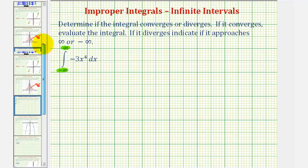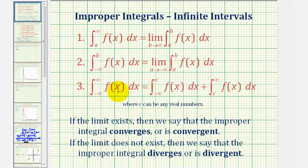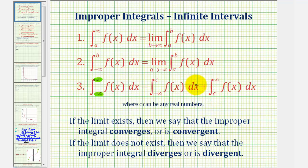For a quick review, we'd be looking at Case 3 of infinite intervals, because the lower limit of integration is negative infinity and the upper limit is positive infinity. So what we're going to do is write this as two separate integrals, where we select a constant c in the interval and write the first integral from negative infinity to c, and the second integral from c to positive infinity. Once we have these two separate integrals, we'll write them using limit notation as shown.